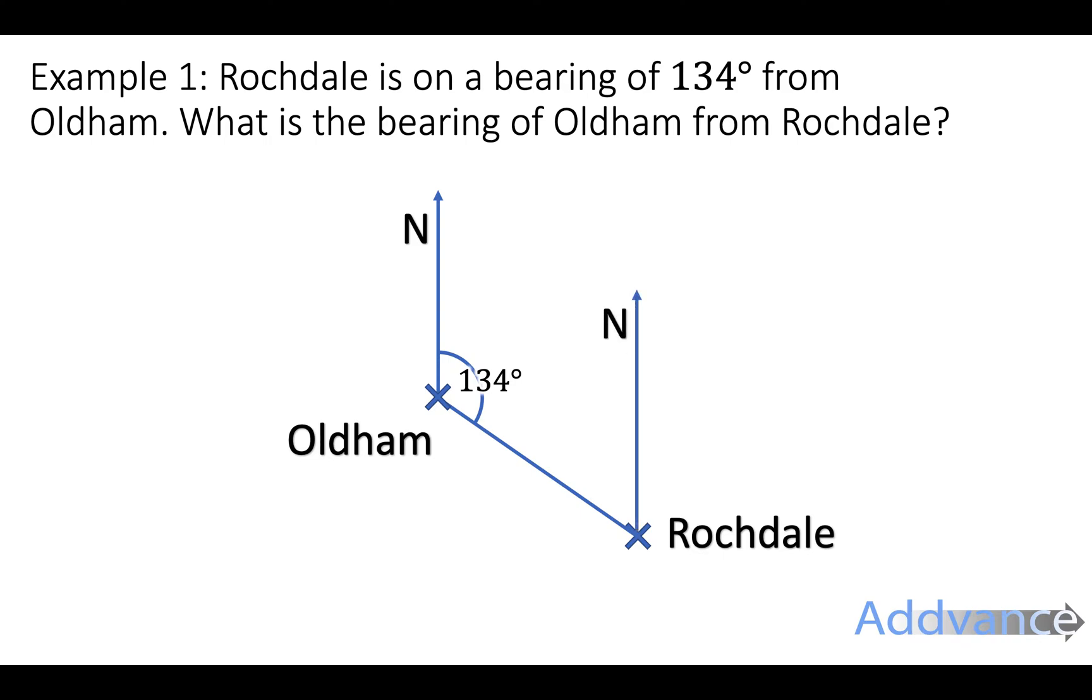And we draw a north line from Rochdale as well. So what we do is we extend the north lines to be two sets of parallel lines. Remember, the north lines are always parallel. And you can see that due to Z angles, this angle over here is also 134 degrees. And that means this angle here is 180 minus 134 because they're both on a straight line.